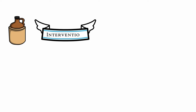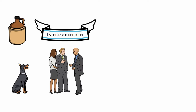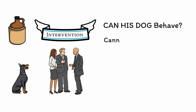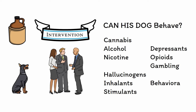It can also be helpful to have a list of all the major substances that can lead to addiction. Picture someone suffering from an uncontrolled addiction whose friends stage an intervention to get him into rehab, but realize there's no one to care for his dog. The question on everyone's mind is: 'This guy's having trouble, but can his dog behave?' This phrase reminds you of the major classes: Cannabis, Alcohol, Nicotine, Hallucinogens, Inhalants, Stimulants, Depressants, Opioids, Gambling, and other Behavioral addictions.